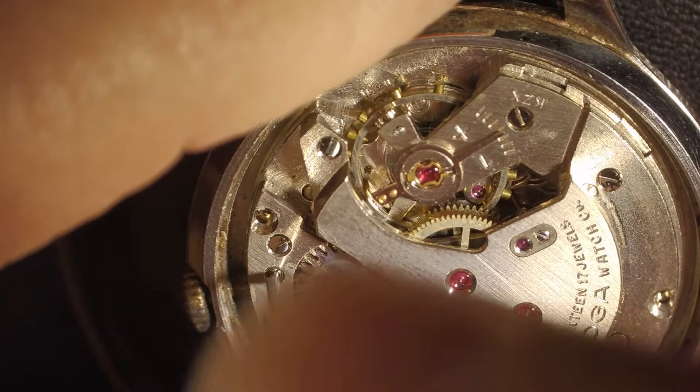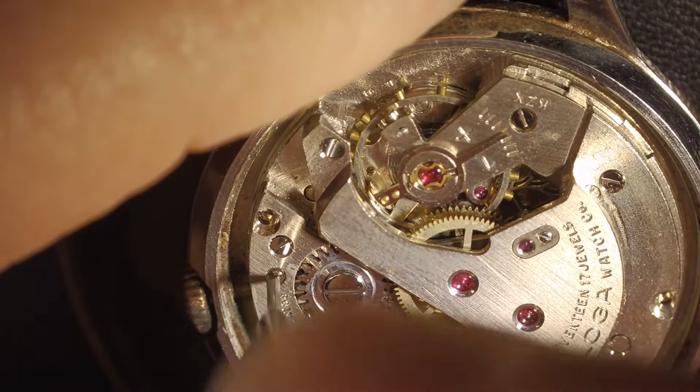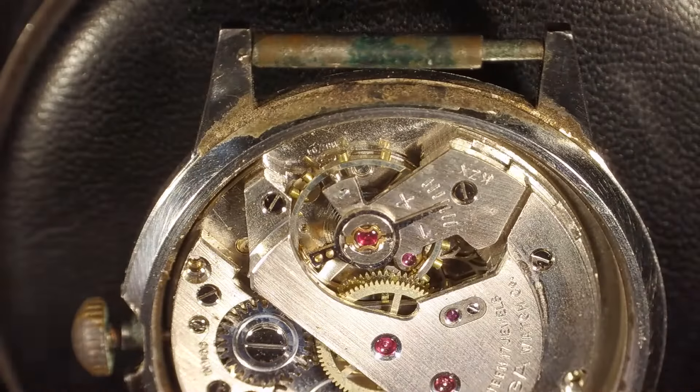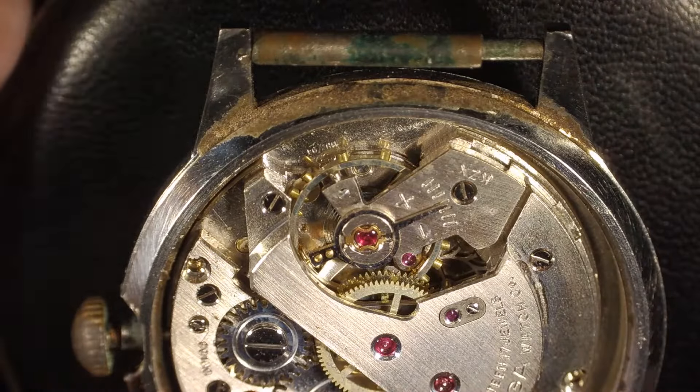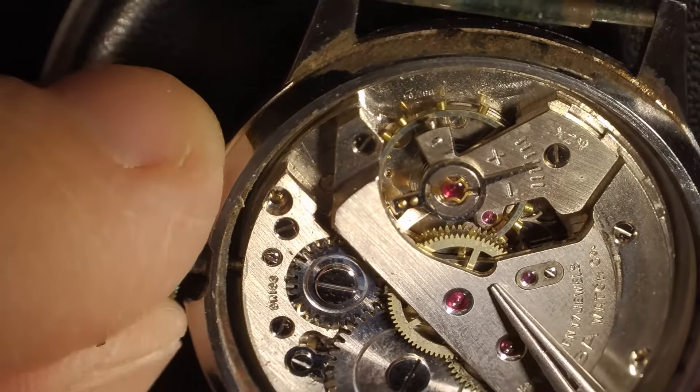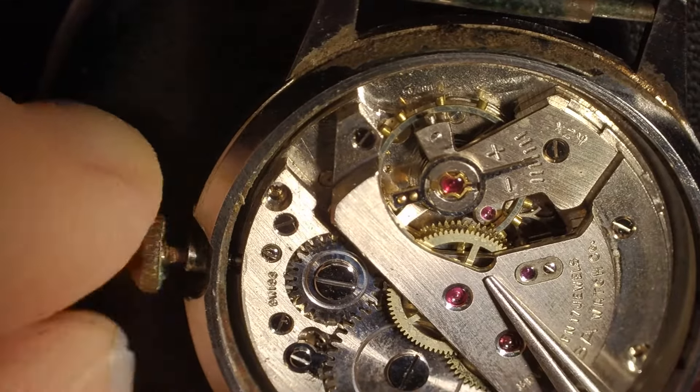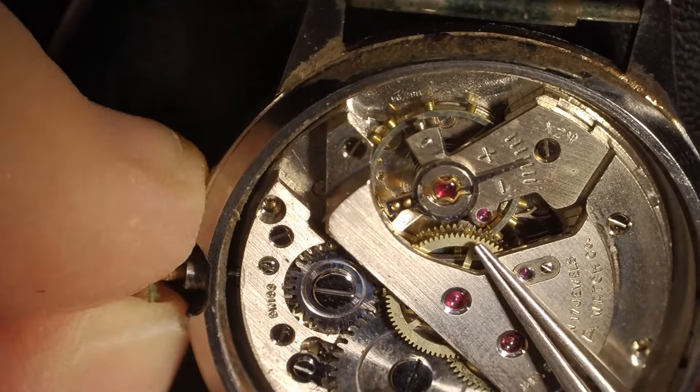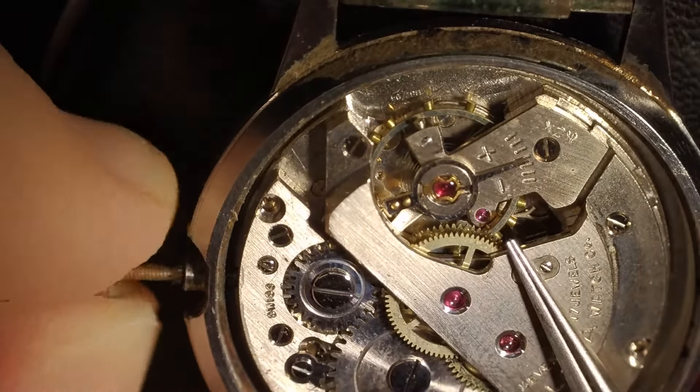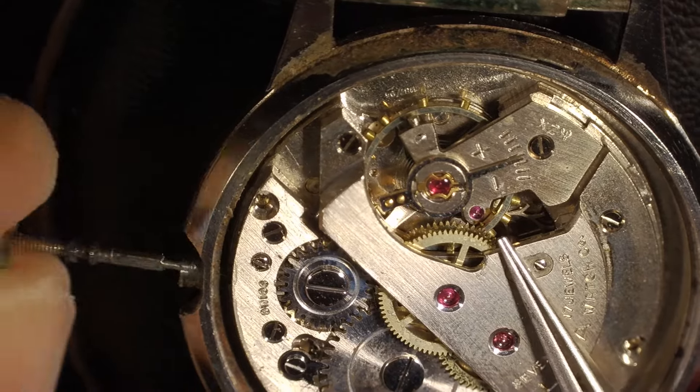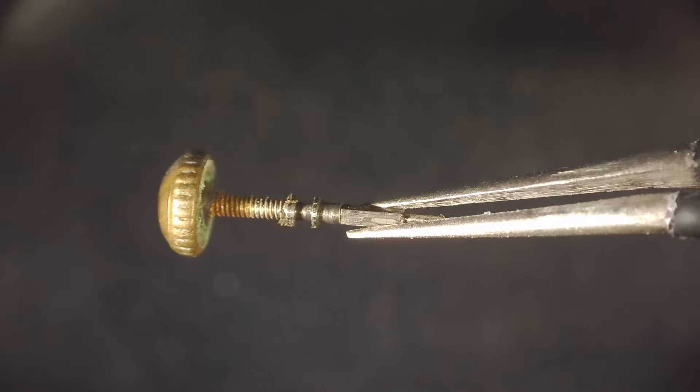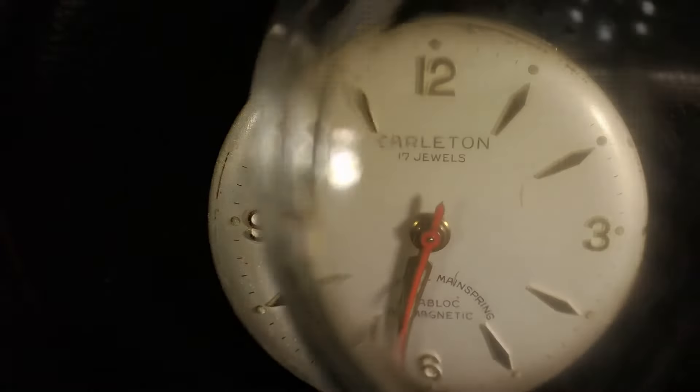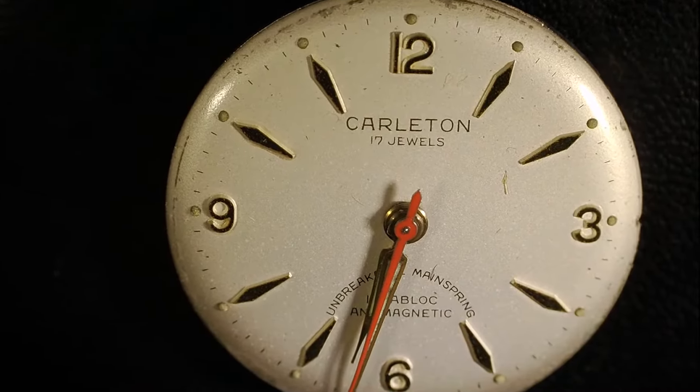To get the movement out of the case, we need to remove the crown and the stem, which is held in place by this small screw. The screw just needs to be loosened and the stem should slip out of the keyless works, which is the part of the watch that winds the spring and sets the hands. Carlton doesn't want to give up his crown, so we're going to have to take it by force. With the stem removed, we can lift the case off of the watch movement and have a closer look at the dial.